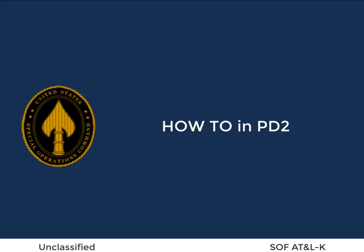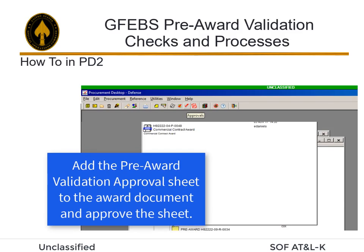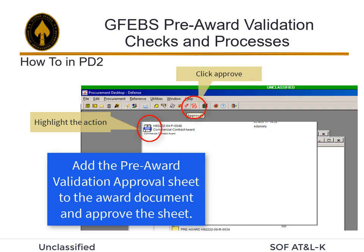The following section will provide you with the visuals of how to do pre-award. To add the pre-award validation approval sheet to the award document, you will select the document, then click Approvals. This approves the document and adds the approval sheet.